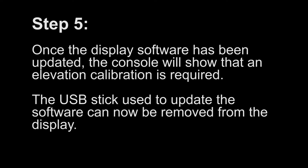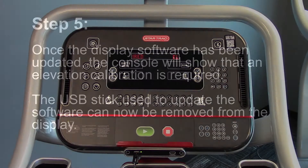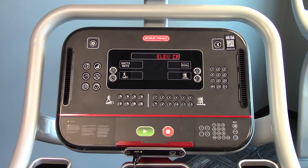Step 5. Once the display software has been updated, the console will show that an elevation calibration is required. The USB stick used to update the software can now be removed from the display.